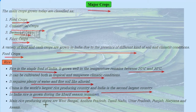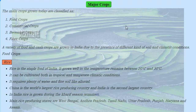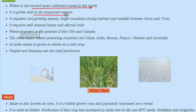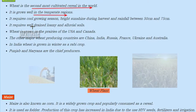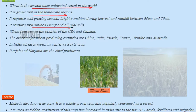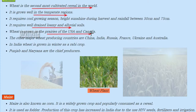Major producing states in India are West Bengal, Andhra Pradesh, Tamil Nadu, Uttar Pradesh, Punjab, Haryana, and Assam. Wheat is the second most cultivated cereal in the world. It grows well in temperate regions and requires well-drained loamy and alluvial soils.